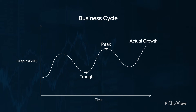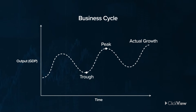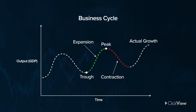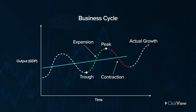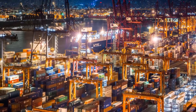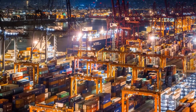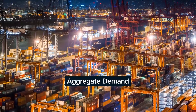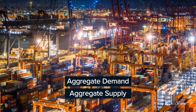Here, we're looking at the big picture — macroeconomic activity. Economic activity expands and contracts on a cyclical basis over time. This is called the business cycle. It generally follows an upward trend. There are two major influences on the business cycle: aggregate demand and aggregate supply.